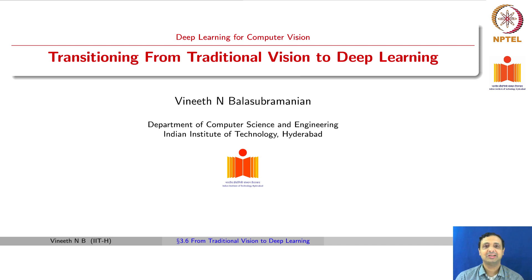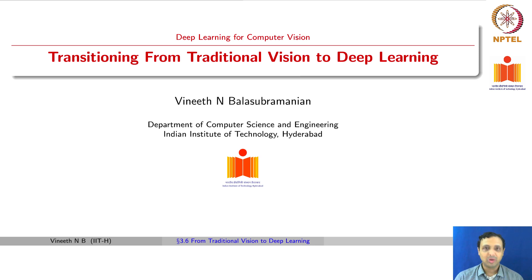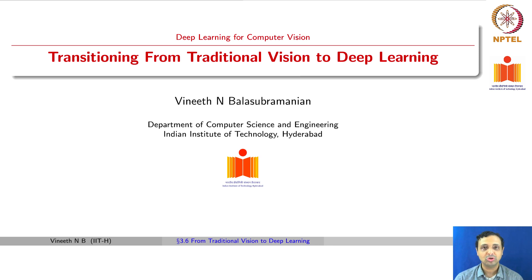To complete this week's lecture, we will summarize some of the things we have seen so far, as we will be transitioning to deep learning from next week. What we have seen so far is a breezy summary of work in computer vision that took two to three decades. An important topic we probably missed is part-based approaches, but we will try to summarize the learnings that will help us transition to deep learning for computer vision.